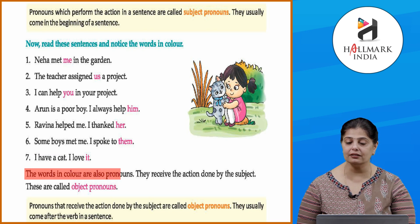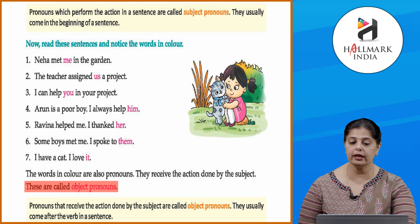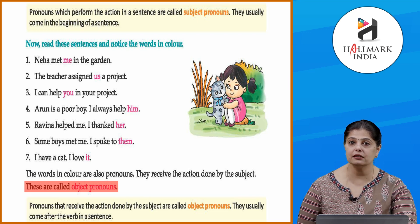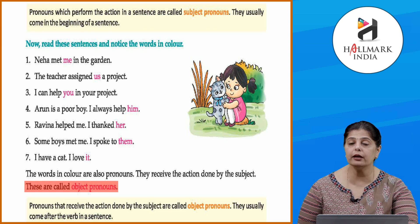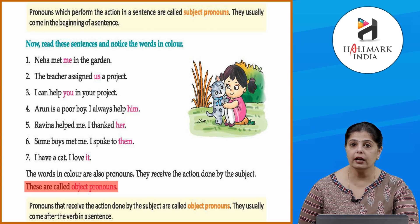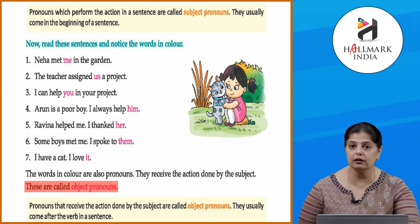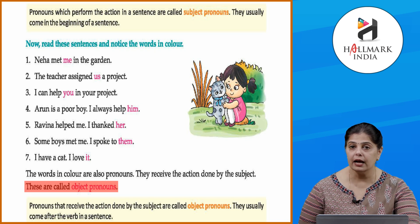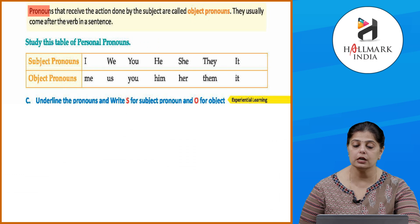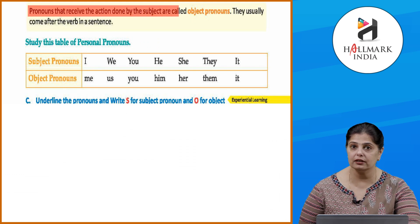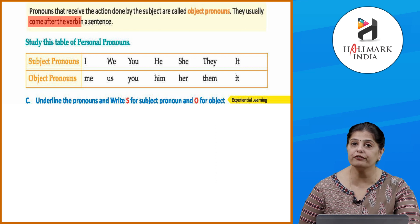The words in color are also pronouns — they receive the action done by the subject. These are called object pronouns. For example, in 'Neha met me in the garden,' 'met' is the action, Neha is the subject, and 'me' is the object. Pronouns that receive the action done by the subject are called object pronouns. They usually come after the verb in a sentence — just like 'me' came after 'met.'